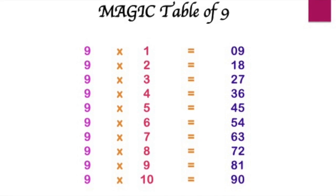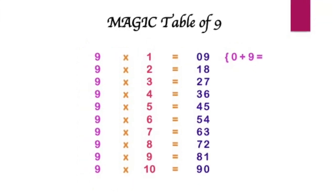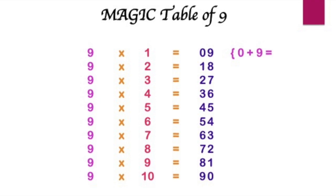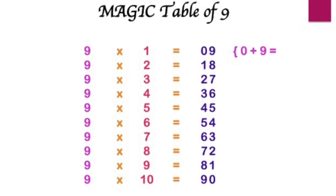Let me help you. So tell me, what is the sum of the digits of the first multiple here? 0 plus 9. That's right, it's 9.